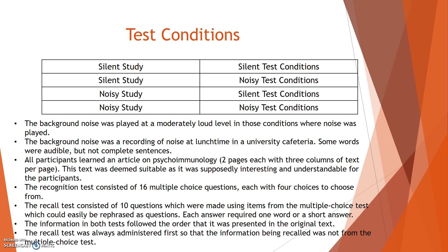All participants learned an article in psycho-immunology — two pages, each with three columns of text per page. This text was deemed suitable as it was interesting and understandable for the participants. The recognition test consisted of 16 multiple-choice questions, each with four choices. The recall test consisted of 10 questions, which were made using items from the multiple-choice test, rephrased as questions requiring one word or a short answer. The information in both tests followed the order presented in the original text. The recall test was always administered first, so that the information being recorded was not from the multiple-choice test.